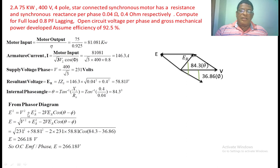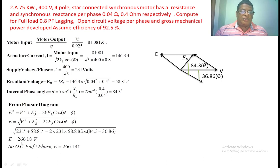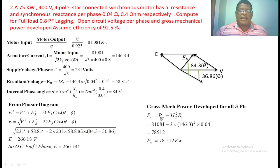Now we apply the parallelogram theorem for these three vectors to find the length of E. E squared equals V squared plus ER squared minus 2·V·ER·cos(θ − φ), because we want the angle between these two vectors. Substituting all the values, E — the counter voltage in a synchronous motor — equals 266.18 volts. Counter voltage and open circuit voltage are both the same. Gross mechanical power developed equals input power minus 3·I²·Ra; substituting Ra equal to 0.04, we get 78.512 kW.